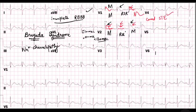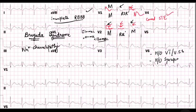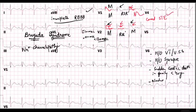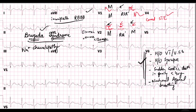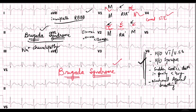Other diagnostic criteria include the presence of the above ECG features and history of VT or VF in the patient, or history of syncope, or family history of sudden cardiac death before the age of 40, and nocturnal agonal breathing. So if the ECG features we have just described and one of these criteria are present, you are definitely dealing with Brugada syndrome. Just note that if these ECG features and one of the criteria is present, you are dealing with Brugada syndrome.